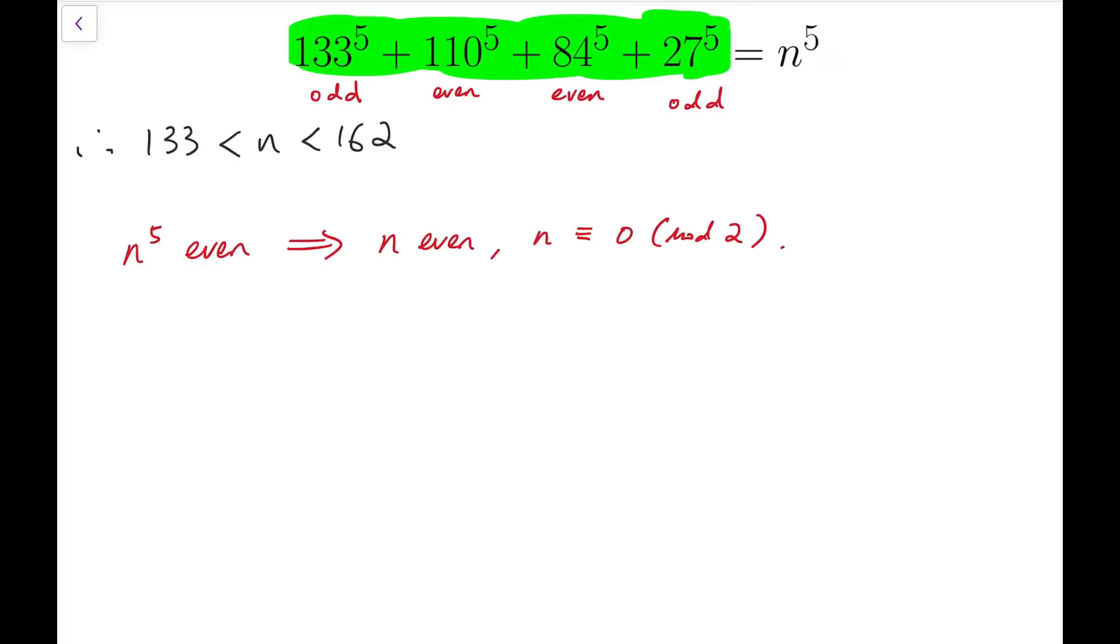Because if n is odd, then if I bring n to the 5th power, it will also be odd. So n^5 cannot be even. Now after dividing both this sum by 2, let's try to divide this sum by 3.